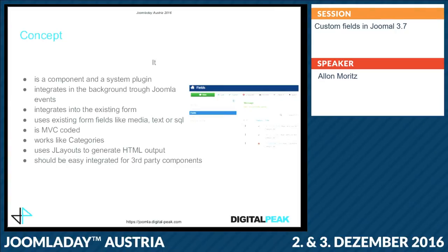As Brian said this morning, there are about 15 different types like media, text, SQL, textarea — the common ones available in Joomla. It's fully MVC-coded like any Joomla 3 component should be. It works like categories — it's not a standalone system for itself. It uses J Layouts to generate the HTML output, which gives you the freedom to adapt it to your needs. Third-party extension developers can do layout overrides for custom fields. Third-party component developers should be able to easily integrate it without many code changes, just by following some rules.